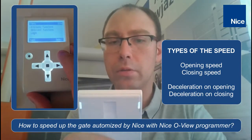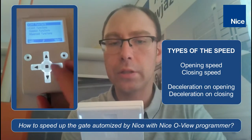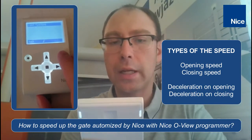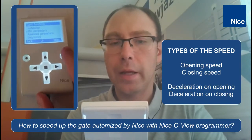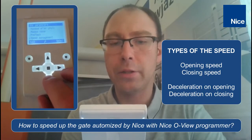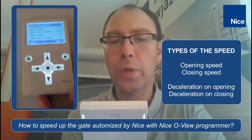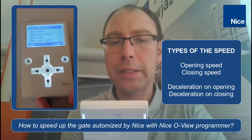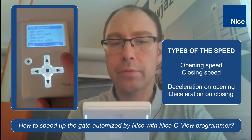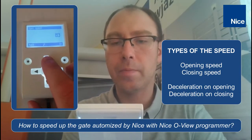First we have to enter the menu, then go to control unit functions, standard parameters, and here we are searching for speed management. Here you can see the four types of speed we can manage. If we want to speed up the gate, we just have to click on select and set the speed to 100.